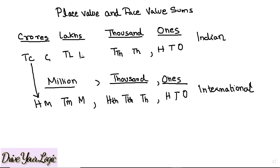So 10 crore means 100 million, and crore means 10 million. 10 lakh means 1 million, and lakh means 100,000. From this part you can see it is similar — the TTH part is the same — but the change comes from here, where in the international system you get 100,000 whereas in the Indian system that is one lakh. So 1 million equals 10 lakh, 10 million equals 1 crore, and 100 million equals 10 crore. These are the numeration systems.